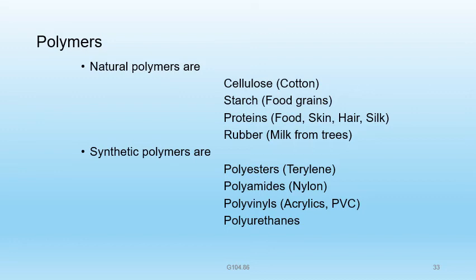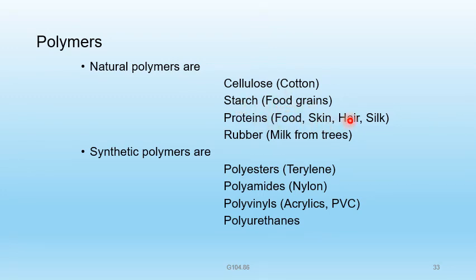Polymers are of two types: natural and synthetic. Natural polymers include cellulose (from cotton), starch (present in food grains), proteins (present in food, skin, hair), silk, and rubber (obtained from latex of trees).